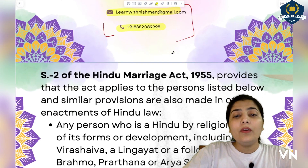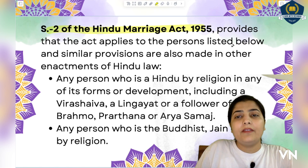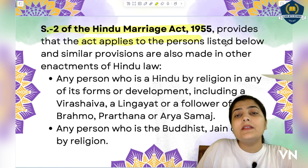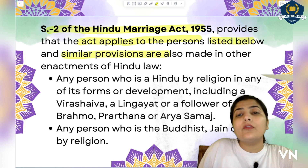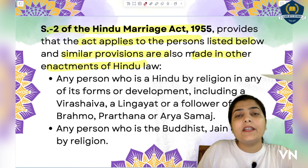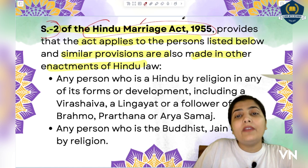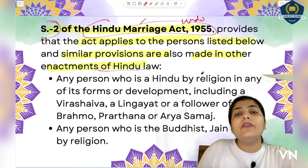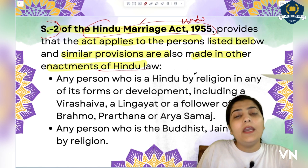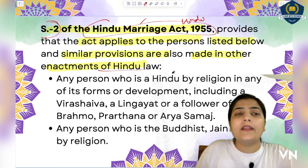Coming to the term 'Hindu': Section 2 of the Hindu Marriage Act 1955 provides that the act applies to the persons listed below, and similar provisions are also made in other enactments of Hindu law. This definition of Hindu given under Section 2 is the same definition applicable in other enactments of Hindu law — such as the Hindu Succession Act, Hindu Adoption Act, Minorities and Guardianship Act. We will carry forward this same definition and consider only those people as Hindu who fall into this category according to this section.